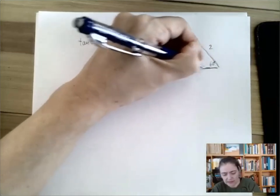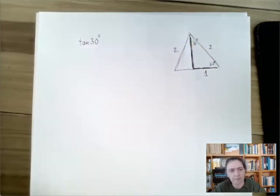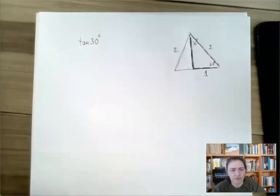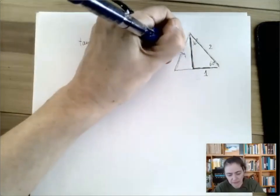And so we have a right triangle whose two sides we know. We run the Pythagorean theorem and we find a missing side to be square root of three.